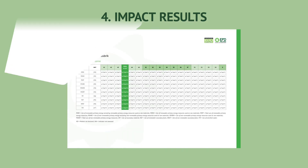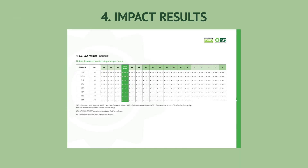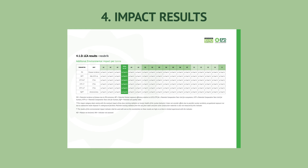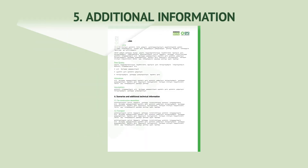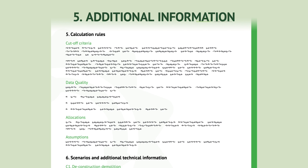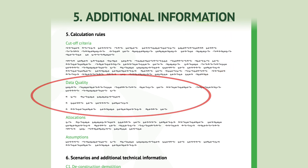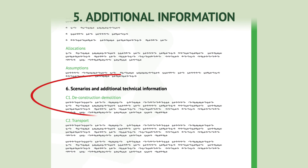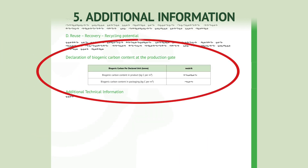On the following pages, you can find other impacts of the product that can help you understand its performance in terms of resource use, waste, and other environmental impacts. Towards the end of the document, you'll find valuable additional information, including calculation rules, data quality details, scenarios, and a declaration of the biogenic carbon content in the product and packaging.